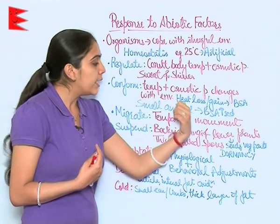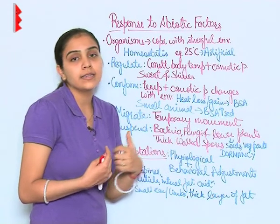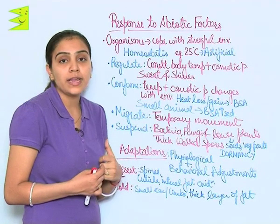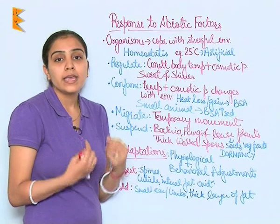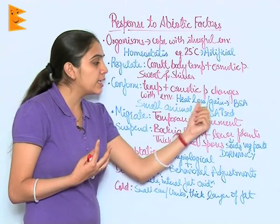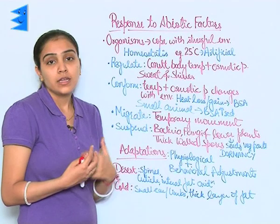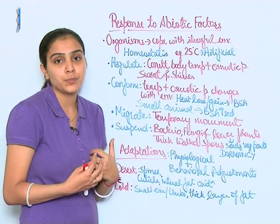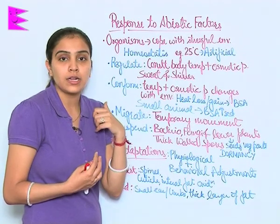Heat loss or gain is directly related to body surface area. In the case of small animals, because they are smaller in size, this leads to an increased body surface area, so heat loss and gain is increased. Furthermore, homeostasis is an energetically expensive process, so small animals conform to their external environment.